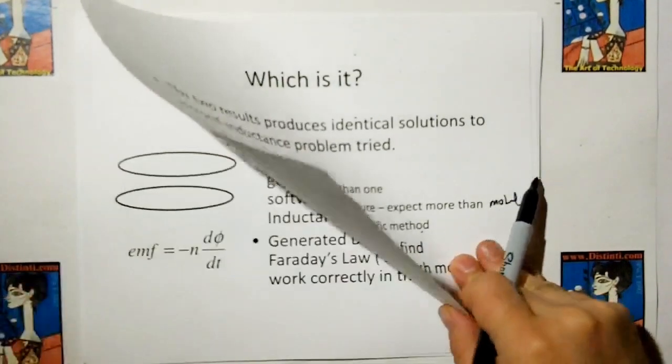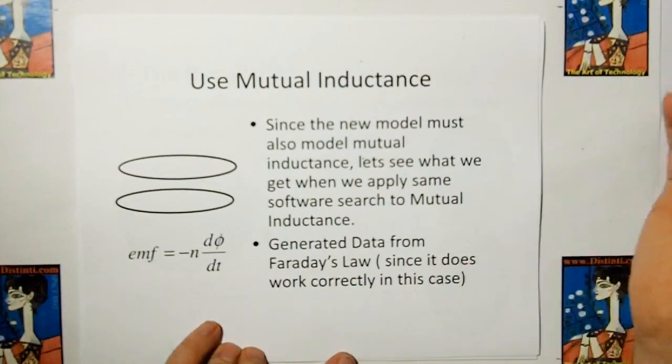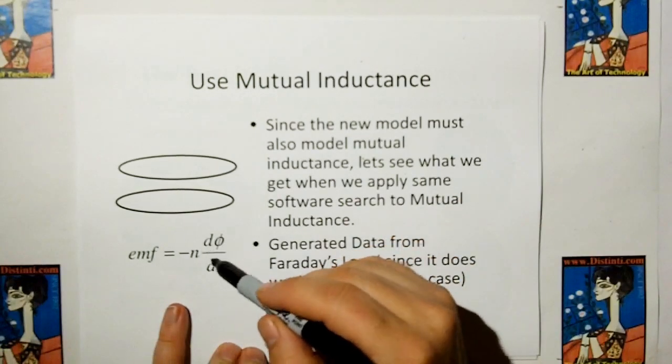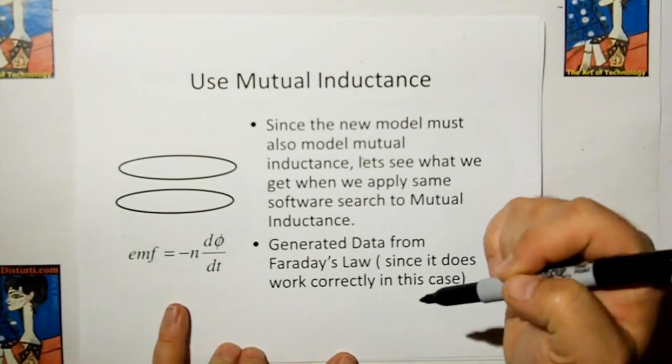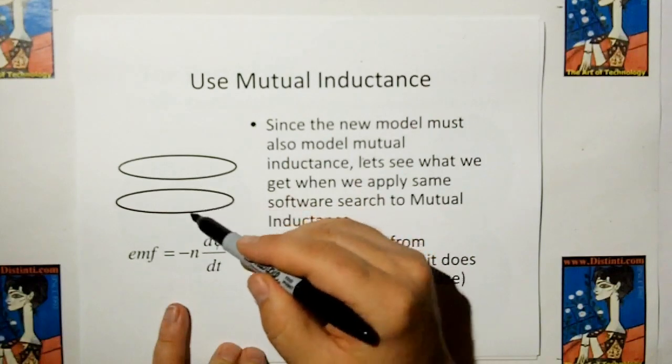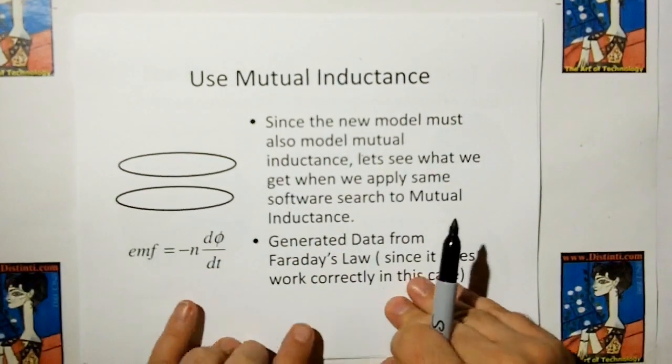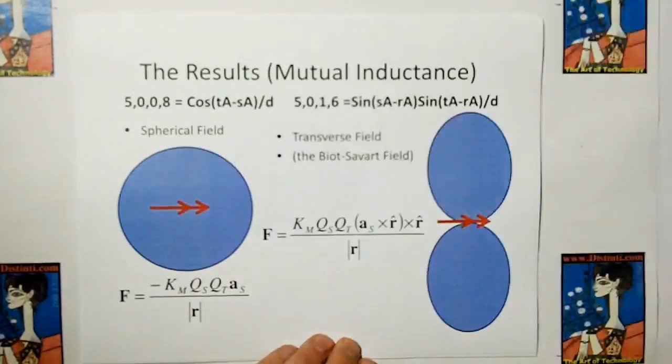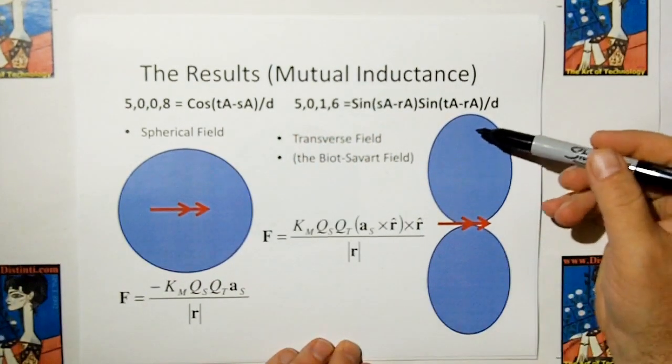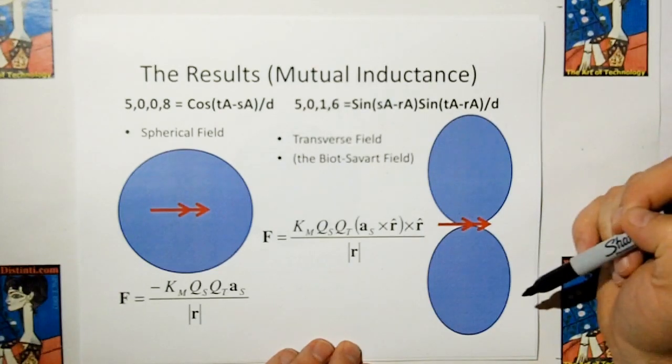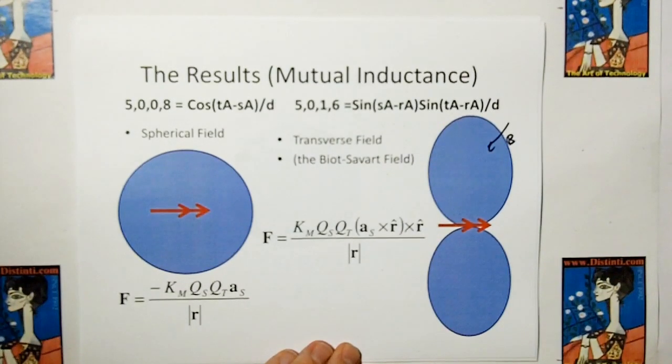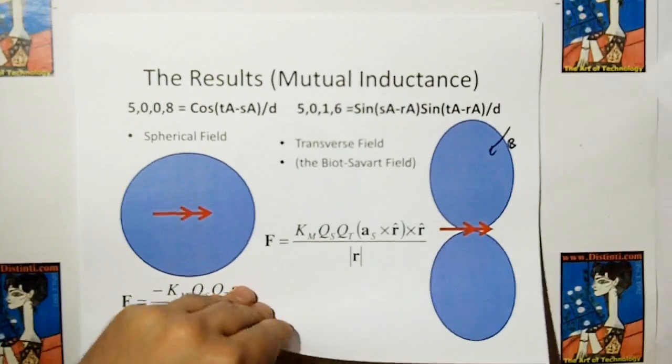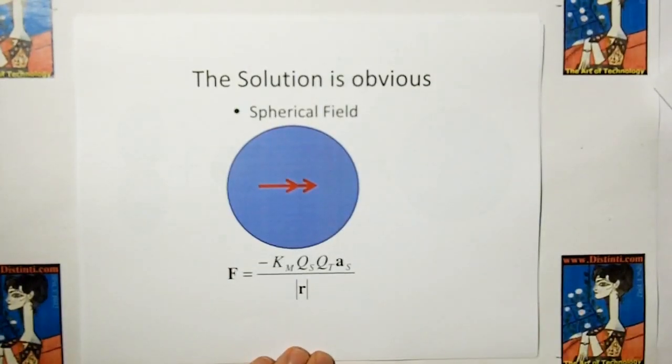So what was the solution? Well, the solution is mutual inductance. Since whatever model I come up for inductance must also work with mutual inductance, then we should search, do the same search through mutual inductance data. But since Faraday's law works very well for mutual inductance, I developed the data from Faraday's law instead of running experiments. And what was the result? The result was the spherical model came back out, but now this time for the mutual inductance we got a transverse model. And this is the Biot-Savart law, the B field of classical theory. So it's obvious that from the two models, the one that satisfied both was the spherical field model.